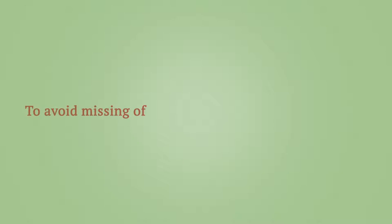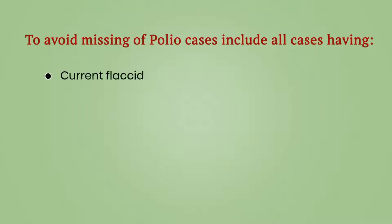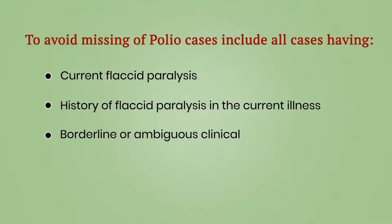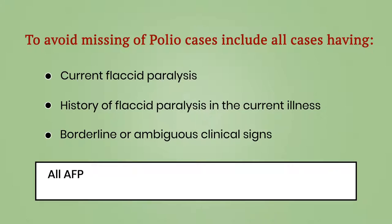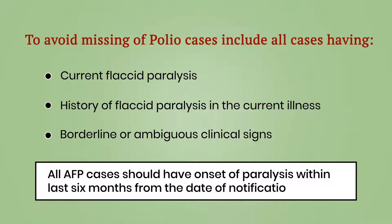To avoid missing polio cases, include all cases having current flaccid paralysis, history of flaccid paralysis in the current illness, and borderline or ambiguous clinical signs. All AFP cases should have onset of paralysis within the last 6 months from the date of notification.